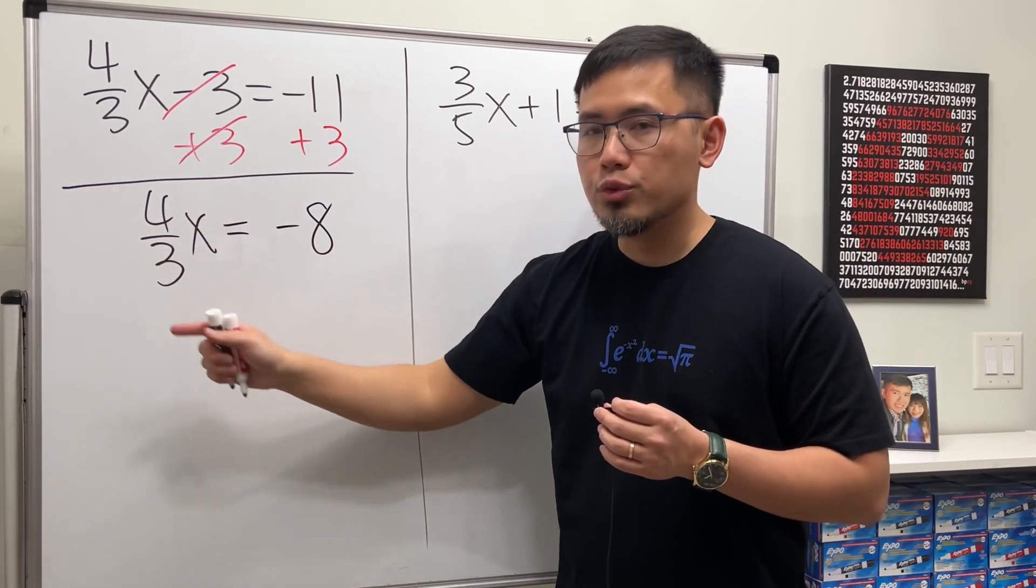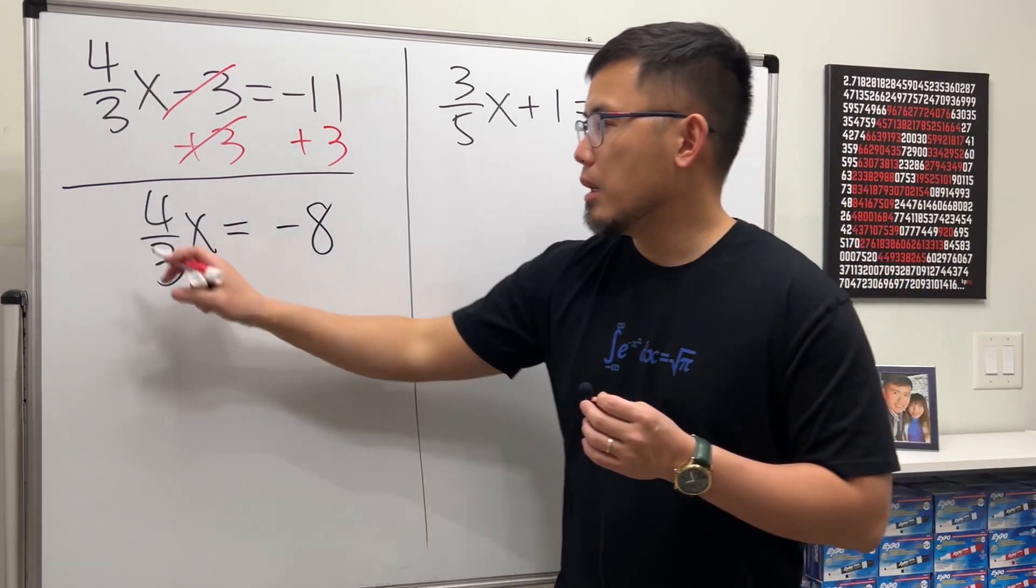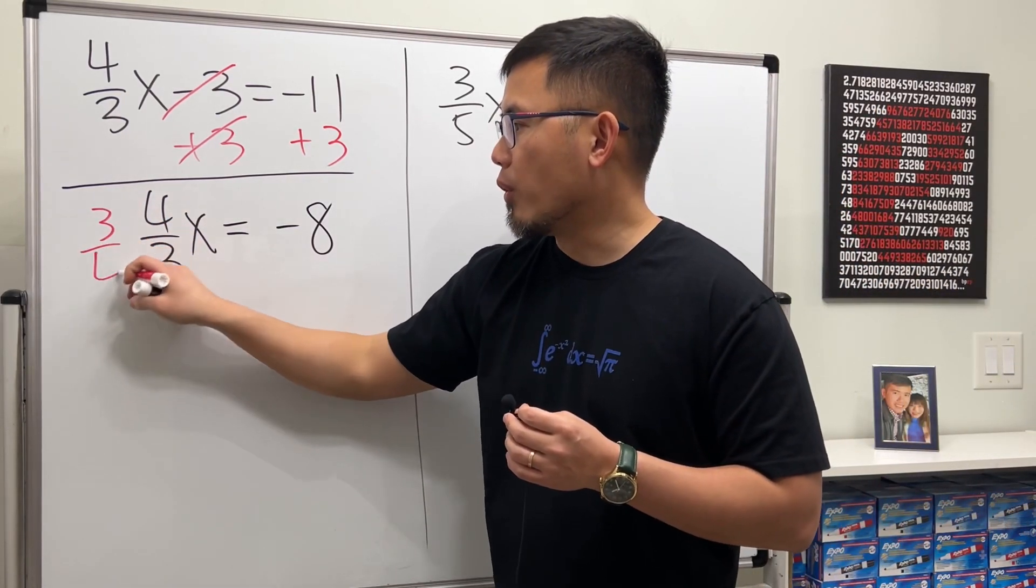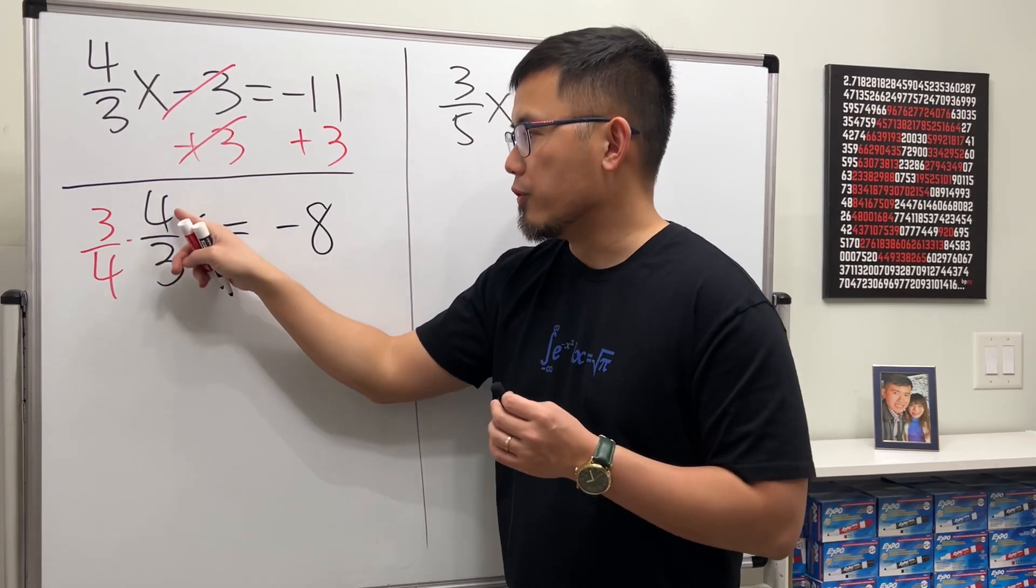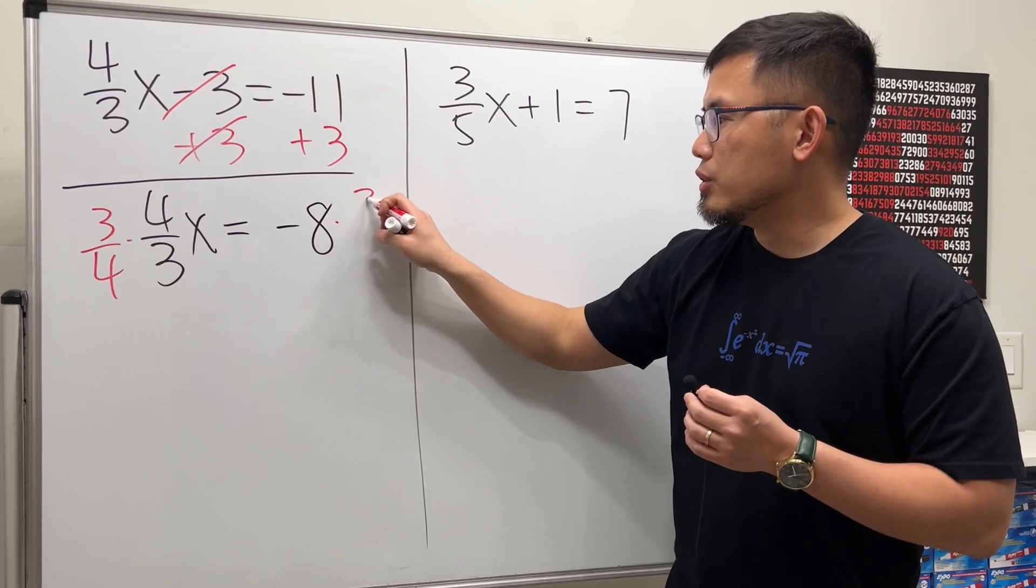To get rid of the 4/3, we're going to multiply both sides by its reciprocal, namely multiply by 3/4. I'm just going to multiply it right here, 3/4.